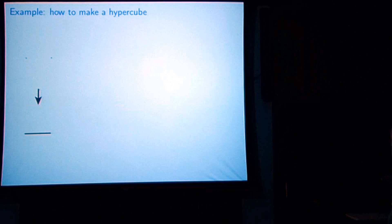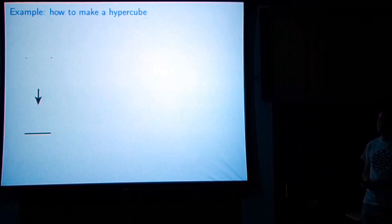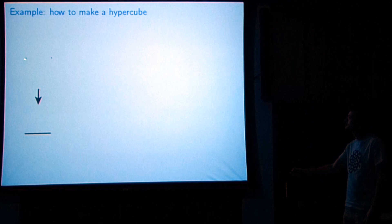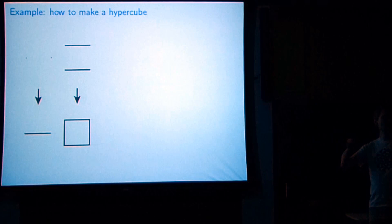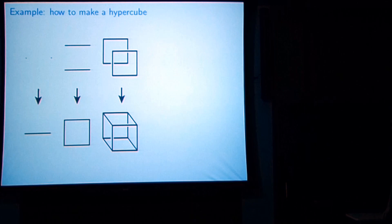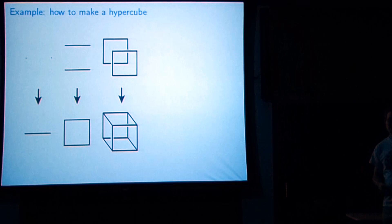As an example of a four-dimensional object, let's make a hypercube. We start very simple — with a point. I move it to the side and draw a line connecting two points: a line segment. Then I take a line segment, move it in a perpendicular direction, join the corners, and I've made a square. I do this again: take the square, move it in a perpendicular direction, join the corners, and make a cube. Then I find a fourth perpendicular direction, move a copy of the cube, and connect up all the lines.